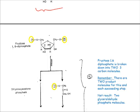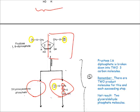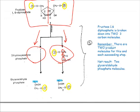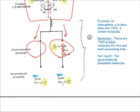Fructose 1,6-diphosphate is broken down into two three-carbon molecules. One is shown here and there's an almost identical molecule with three carbons — one, two, three — and one phosphate. It's like half the molecule gets split one way and the other half the other way. After a little rearranging, we end up with two molecules of glyceraldehyde phosphate.